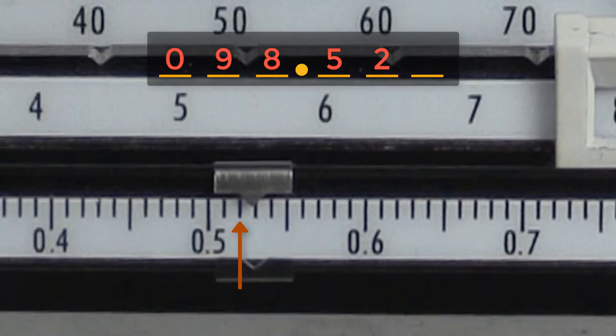Now we need to make an estimate. In our mind's eye, we divide the space between 0.52 and 0.53 into ten equal parts, and estimate the final digit.